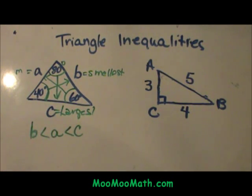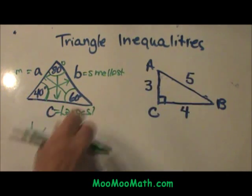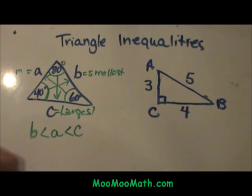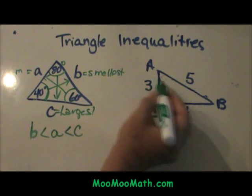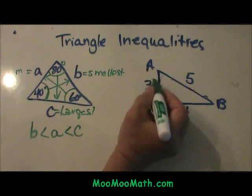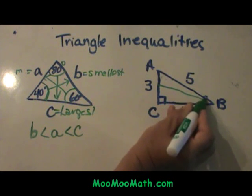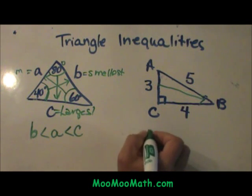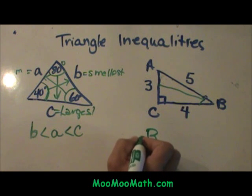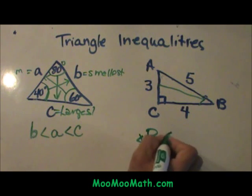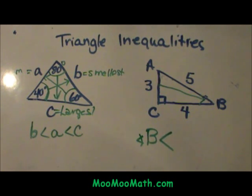Now let's look at it in reverse. If you are given the three sides, you do the exact same thing, only going back to the angle. So side 3 is my smallest side, so it is opposite angle B. So angle B is my smallest angle. Now what is my next smallest angle?